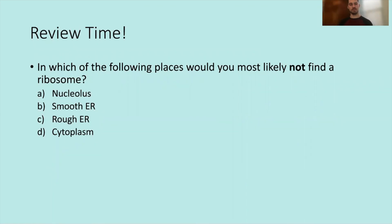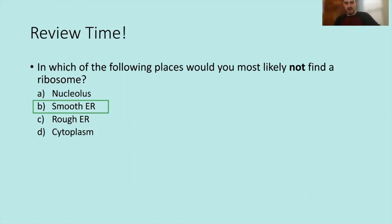Final review question: In which of the following places would you most likely not find a ribosome? The correct answer is B, the smooth ER. The nucleolus is a ribosome factory — that's where they're produced. The rough ER has ribosomes studded on its walls to produce proteins. Free ribosomes are also found floating in the cytoplasm. The smooth ER is called smooth specifically because of the absence of ribosomes, which gives that membrane a smoother appearance.